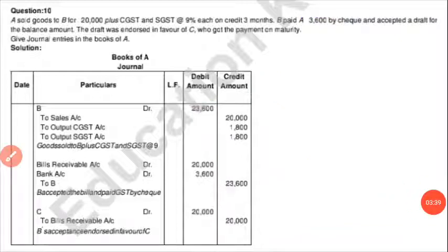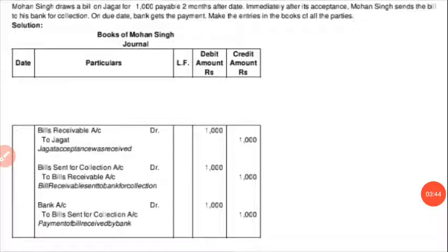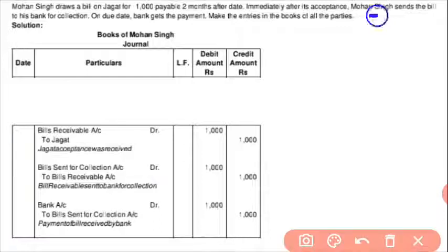Next question: Mohan draws a bill for 1,000 payable two months after date. Immediately after its acceptance, Mohan sends the bill to his bank for collection. On due date, the bank gets the payment. Make the journal entries.